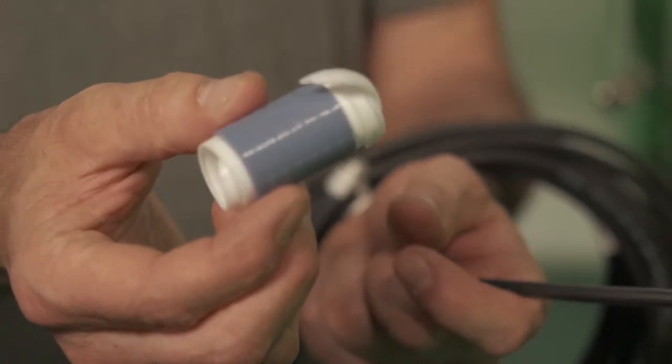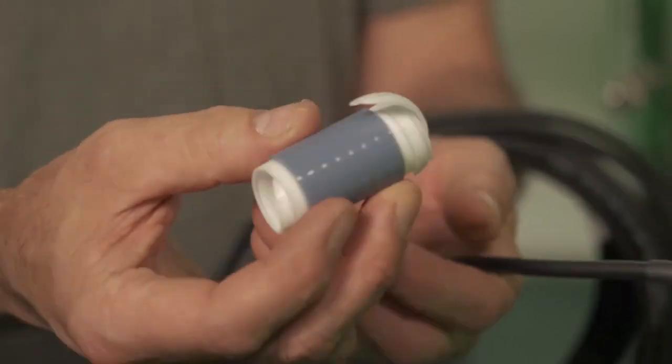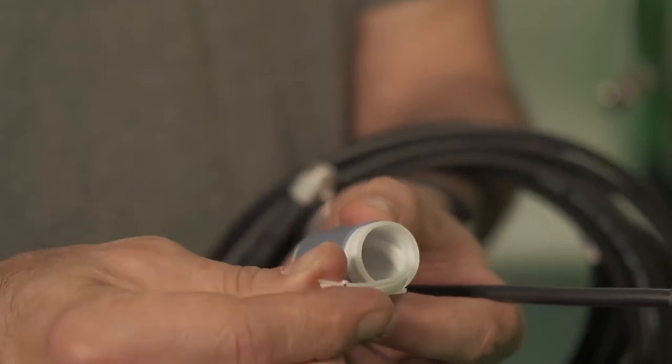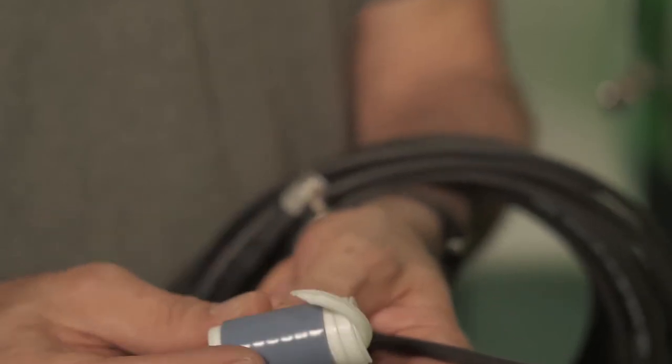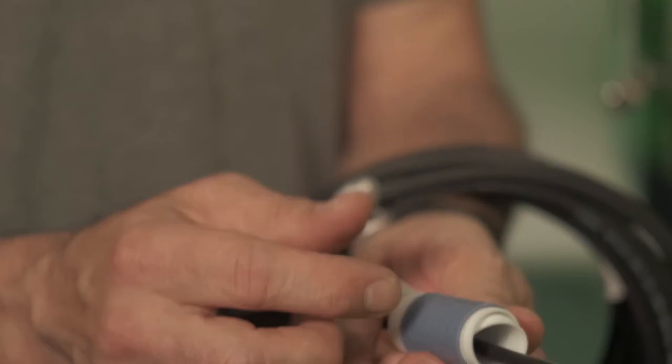The next step is to take our cold shrink and put this over the end of the cable assembly. What you want to make sure is that the tail of the cold shrink goes over the cable first, so it's facing towards you.